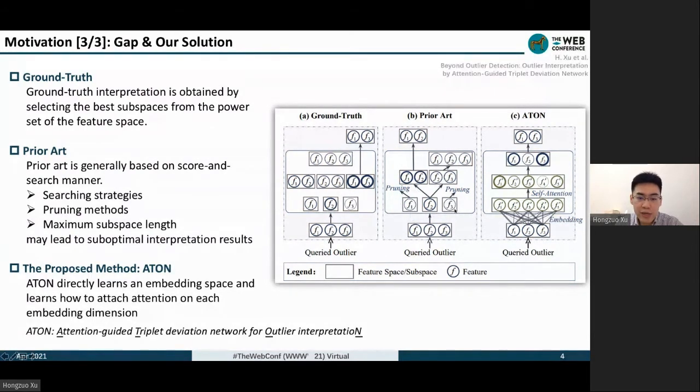In this example, features f1 and f3 may be pruned in the first level, and thus this interpretation method can only yield the suboptimal result f1, f2.